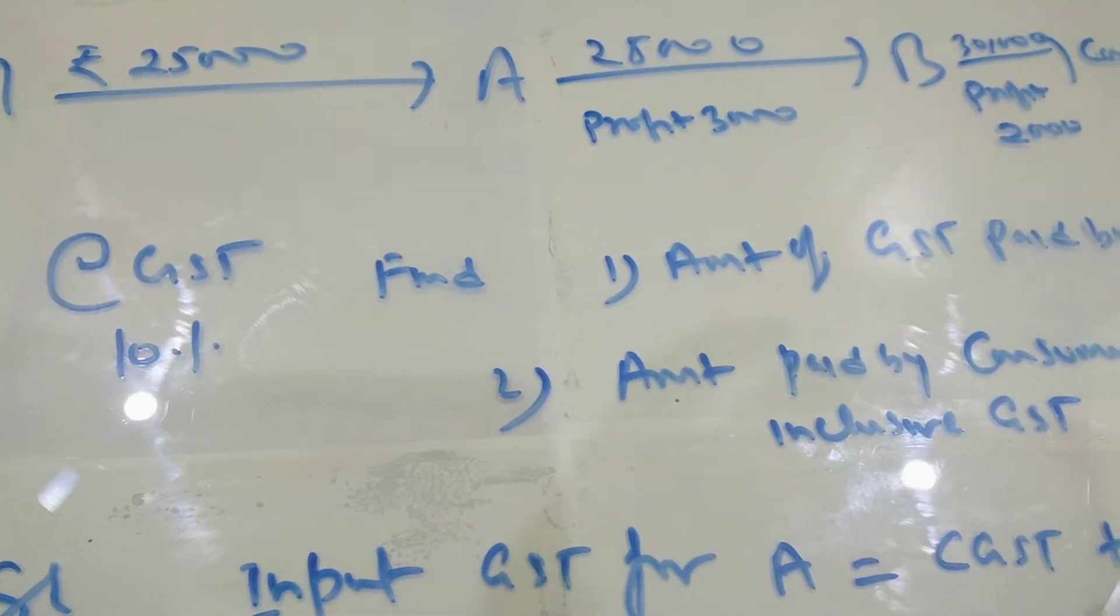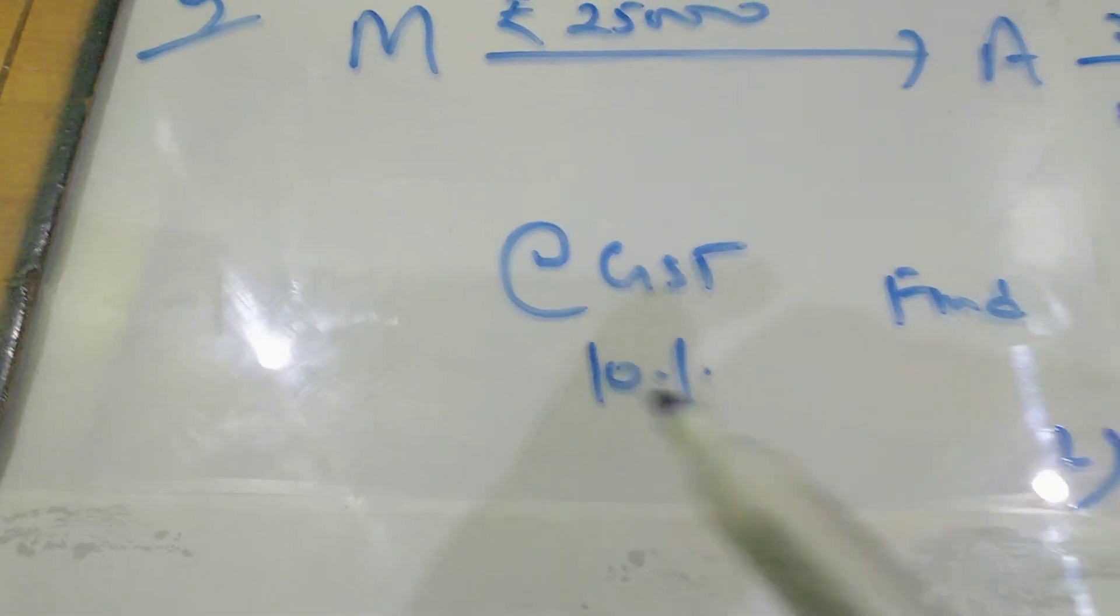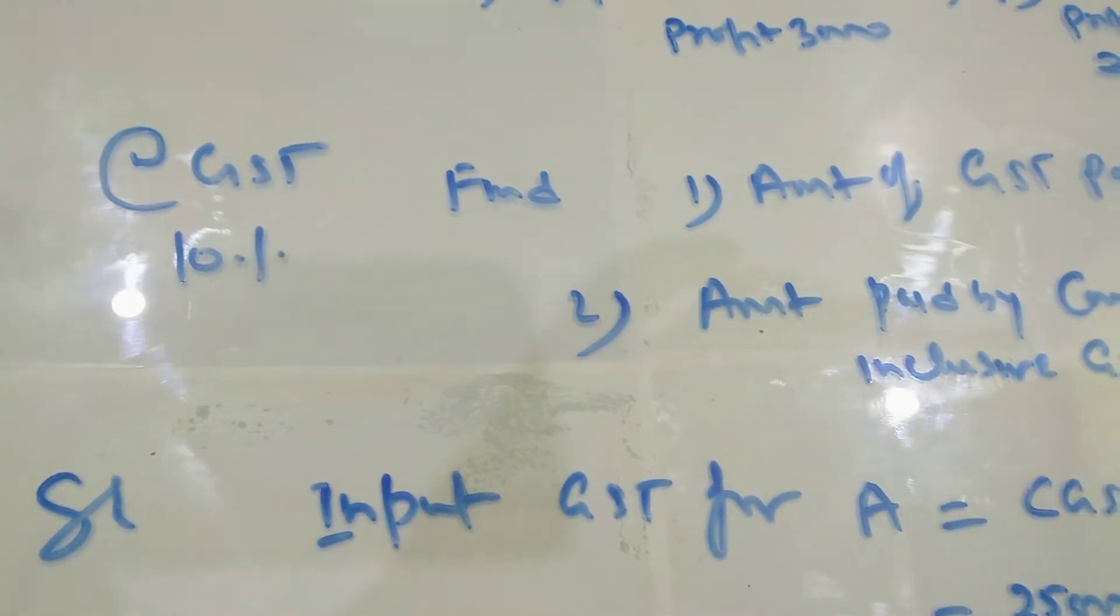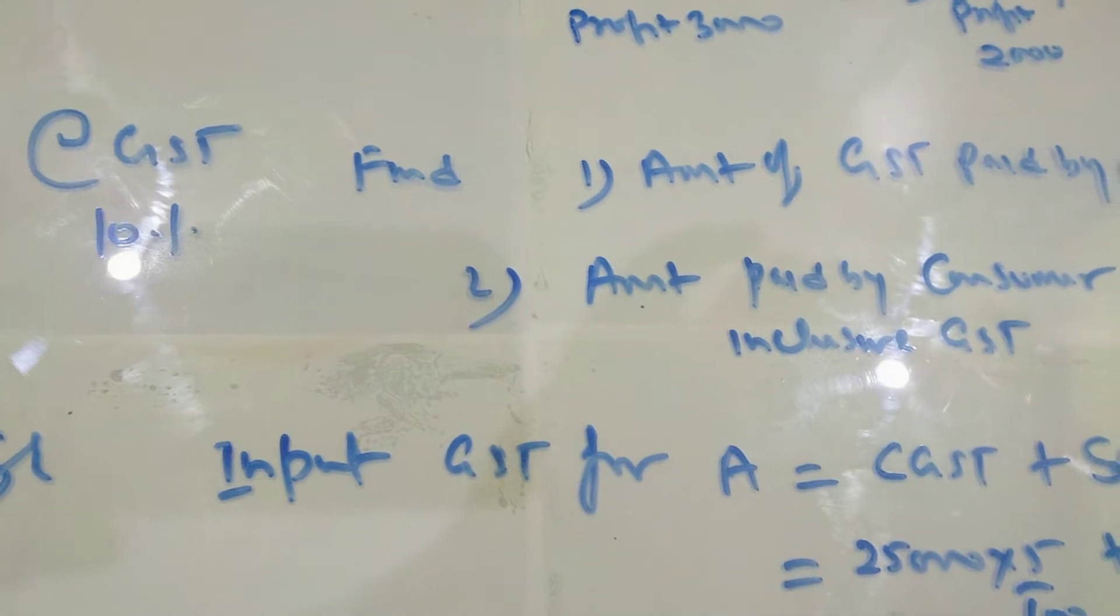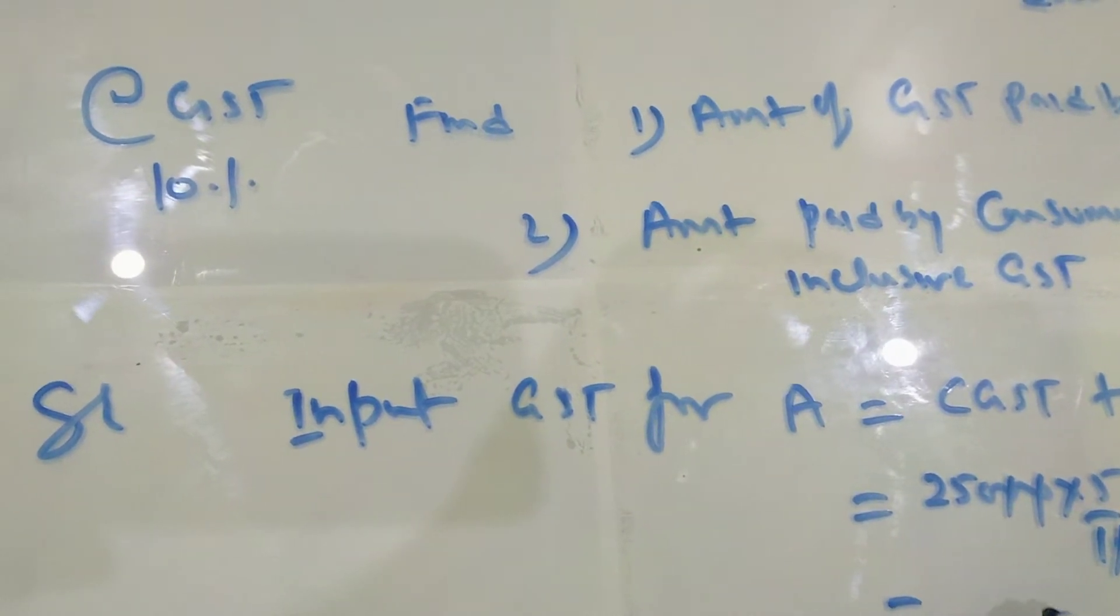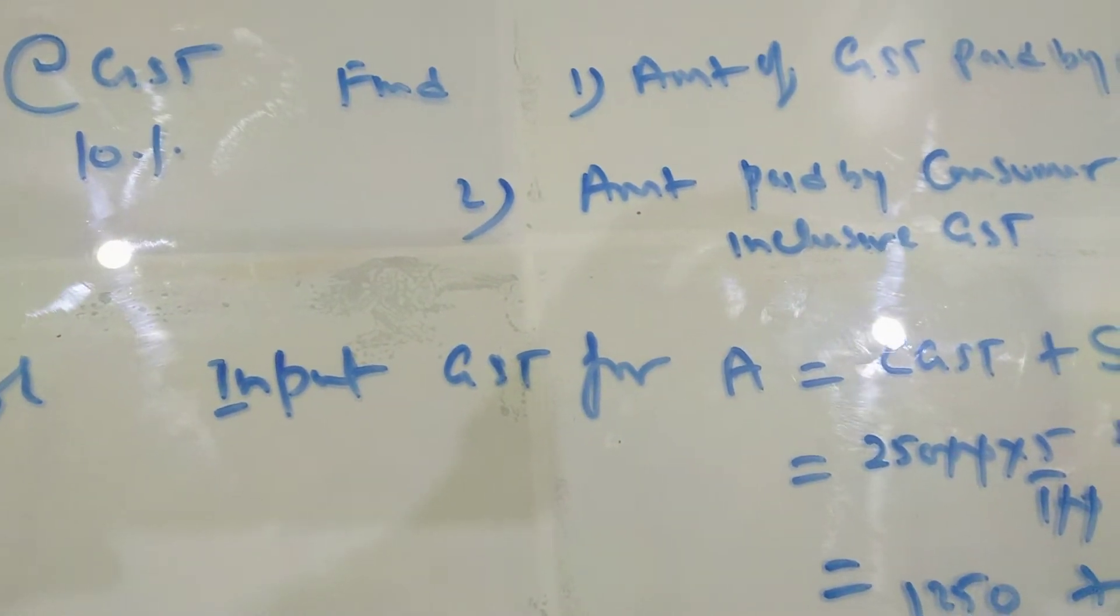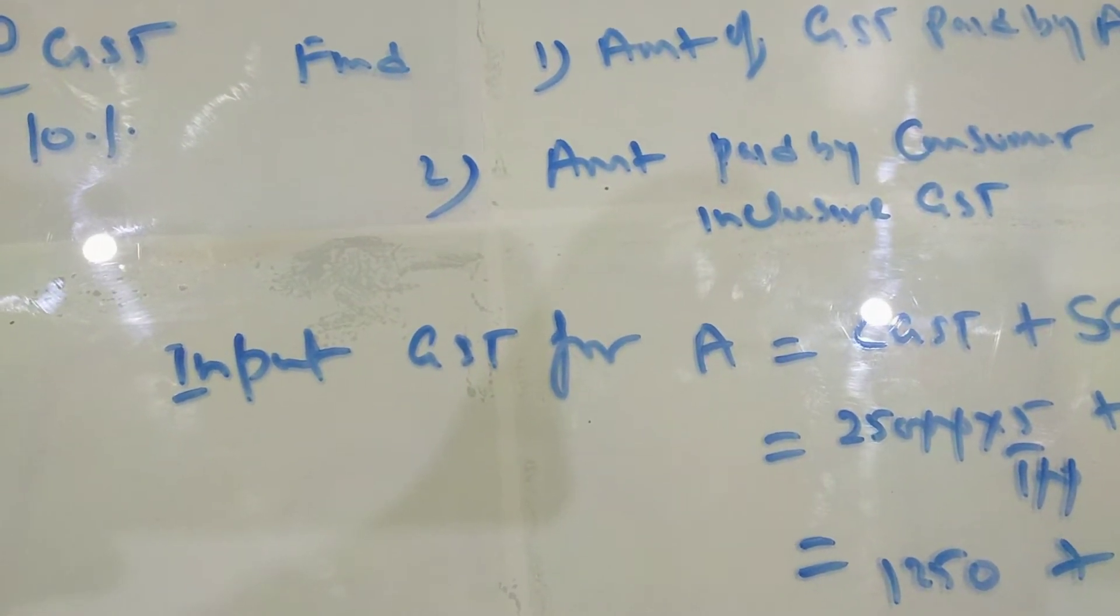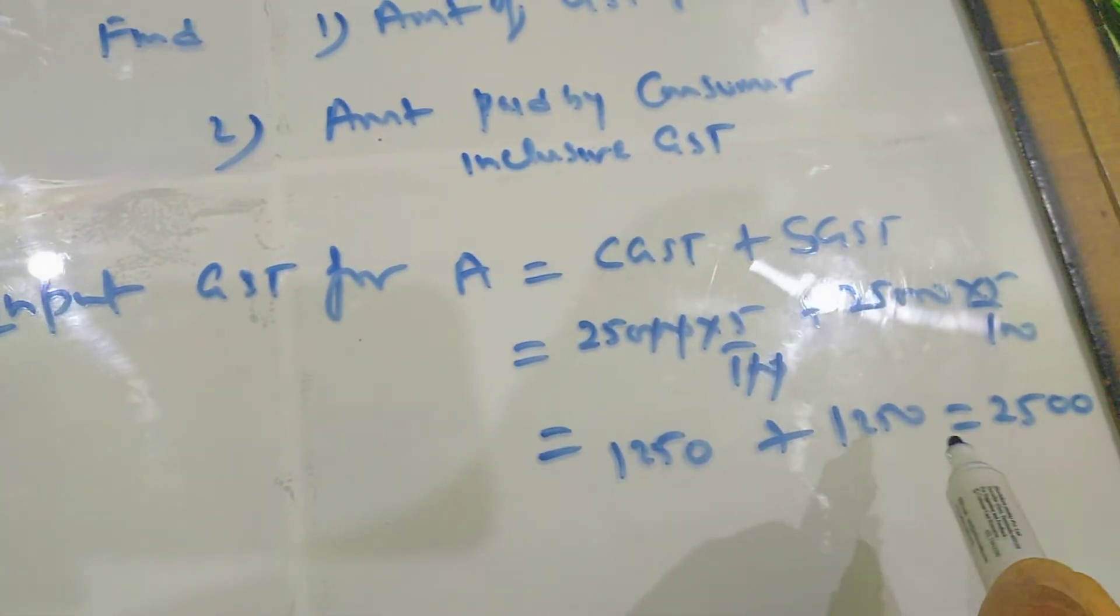So first you find input GST for A. Input GST means CGST plus SGST. The rate of GST is given 10%, so 5% for CGST: 25,000 into 5/100. And SGST is 25,000 into 5/100. Here you cancel out two zeros. So it is 2,500 for input GST.